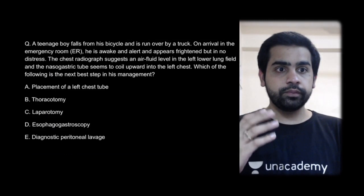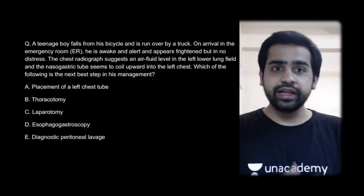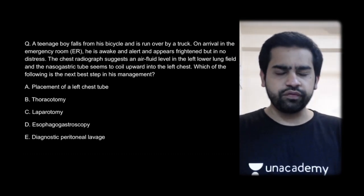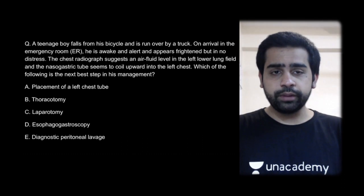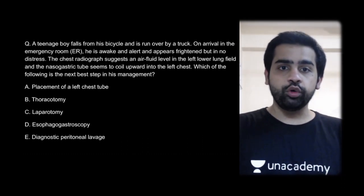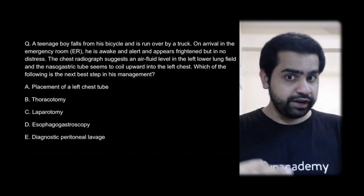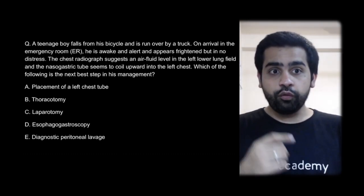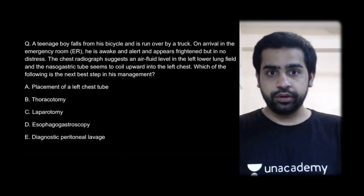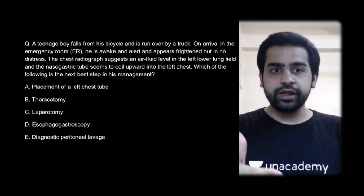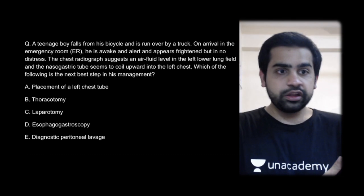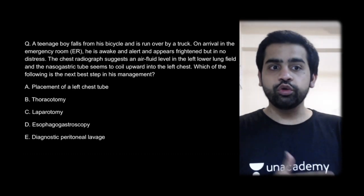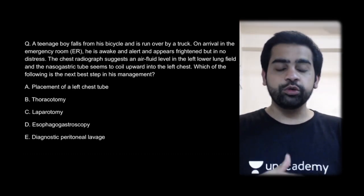Next question: a teenager who has fallen from a bicycle and been run over by a truck is brought to the emergency room. On chest X-ray, there is an air-fluid level on the left lower lung field. When a nasogastric tube is passed, it coils in the left chest. Which is the next best step in management — insert a chest tube on the left, thoracotomy, laparotomy, esophagoscopy, or diagnostic peritoneal lavage?